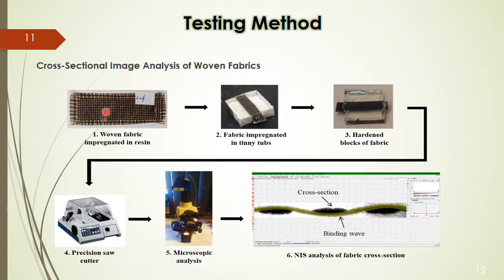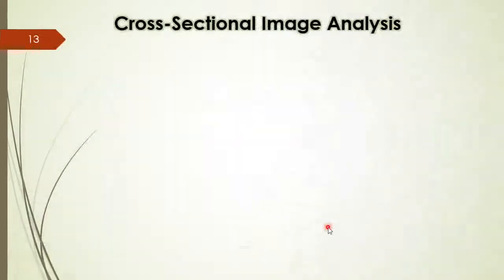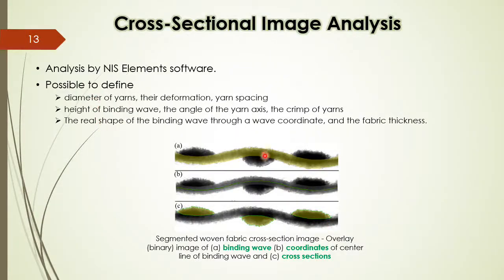How can we do the testing? We have the fabric, we can impregnate it into the resin and make the cross sections of it. By analyzing the microscope, taking the images, we can analyze these cross sections. By the cross sectional images, we can calculate the real different parameters of the binding wave and its cross sections.